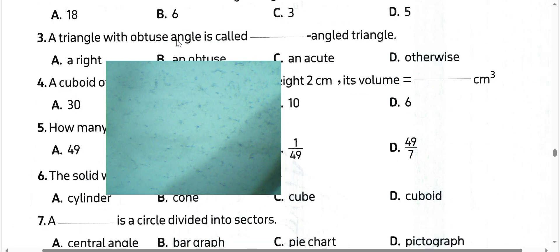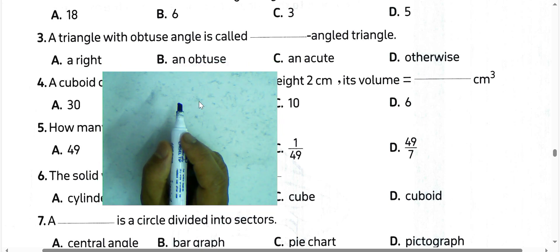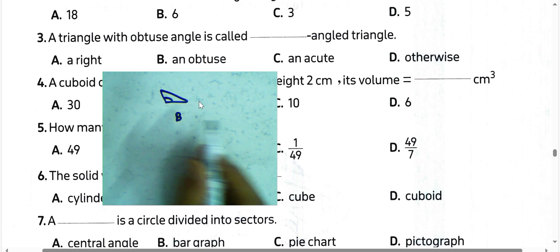Next question, a triangle with an obtuse angle, we call it an obtuse angle triangle. Choose letter B.